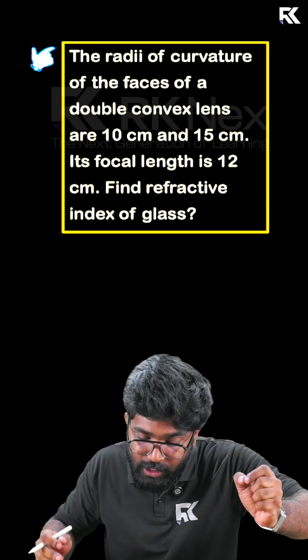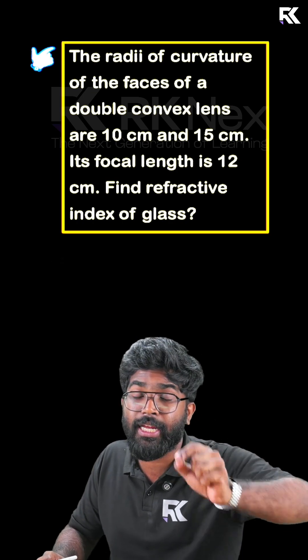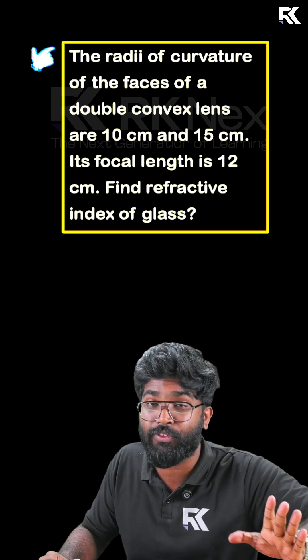The question is that the radius of curvature of faces of a double convex lens are 10 cm and 15 cm. The focal length is given by 12 cm. Find the refractive index of the glass.